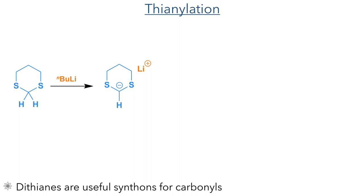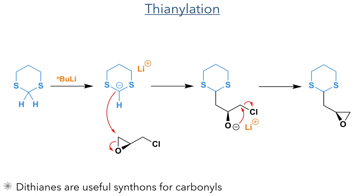Fragment 1 begins with 1,3-dithiane, which can be thought of as an analogue of formaldehyde. Unlike formaldehyde, it can be deprotonated with n-BuLi to form a nucleophile. This was reacted with epichlorohydrin, attacking at the less substituted end of the epoxide. This opens the ring, and the resulting anion then displaces chloride to form a new epoxide.